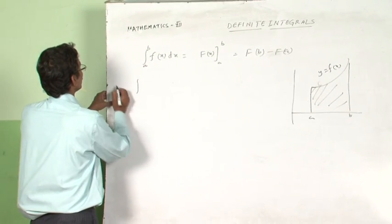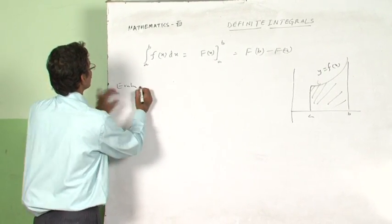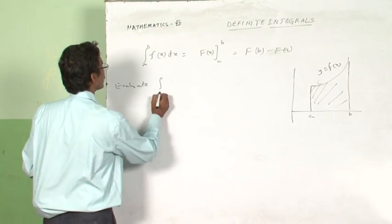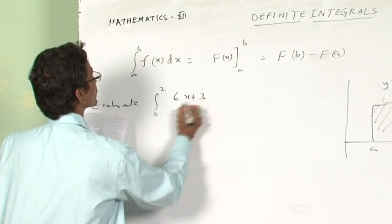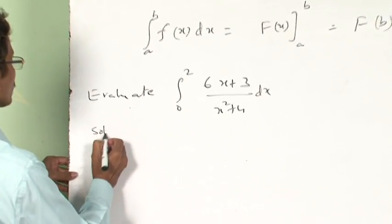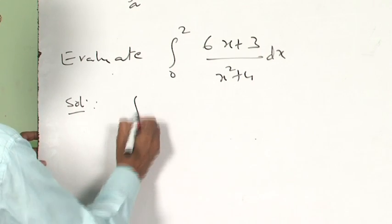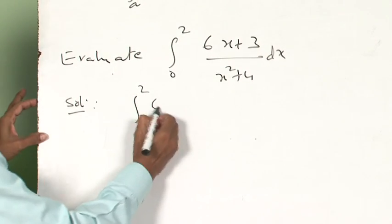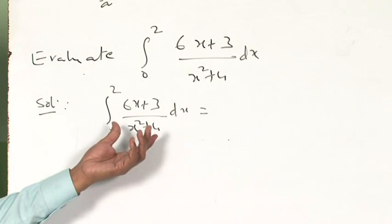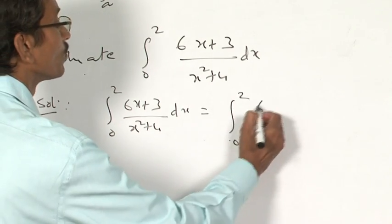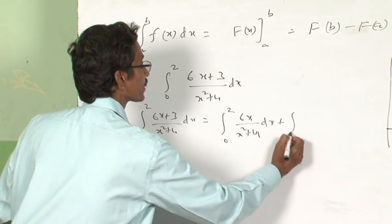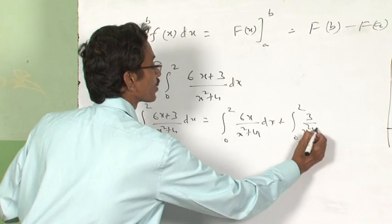Consider a problem: evaluate the integral from 0 to 2 of (6x + 3) / (x² + 4) dx. The solution begins by splitting this into the sum of two integrands: the integral from 0 to 2 of 6x/(x² + 4) dx, plus the integral from 0 to 2 of 3/(x² + 4) dx.